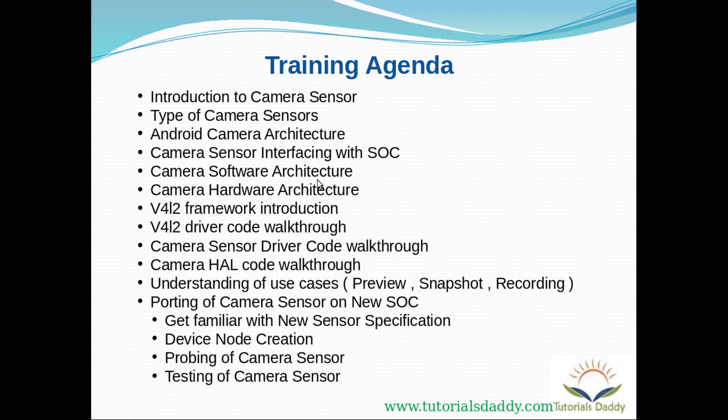Then we will move ahead with the camera software architecture, understanding different use cases like how preview, snapshot, recording, and other camera-specific use cases work. Then we will move to camera hardware architecture, where we will discuss the different pipelines created for different use cases — preview, snapshot, and recording. For each of these use cases, different types of pipelines are created, and we need to understand the hardware architecture pipeline.